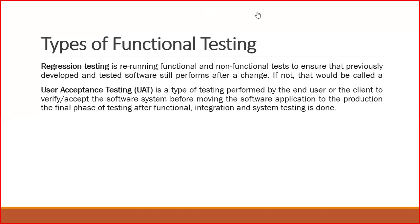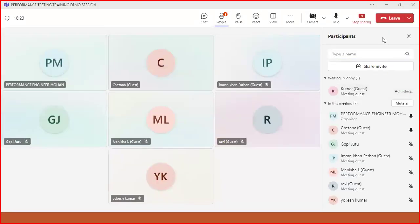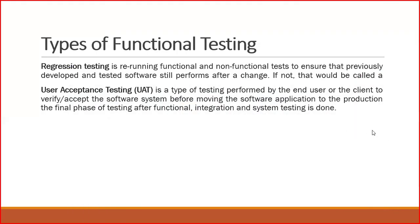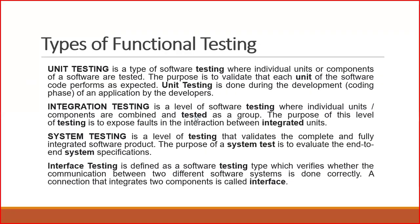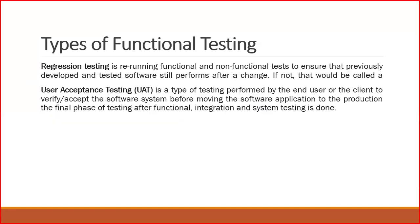User acceptance testing, or UAT, is testing the application in front of the client. We verify whether each and every functionality of the application is working properly in front of the user or client. That type of testing is called user acceptance testing.